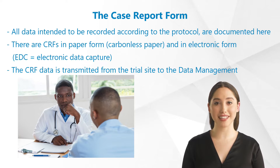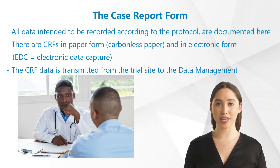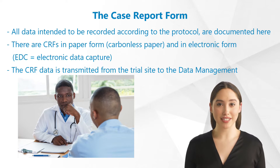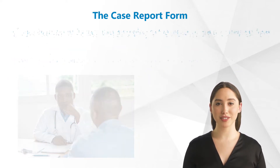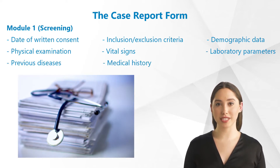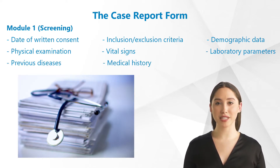CRFs exist in paper form, sometimes even on carbon paper, as well as in electronic form. One CRF is filled in per patient, and CRFs need to be allocated to patients clearly in order to avoid confusion. The case report form is usually divided into five modules with thematically related contents, reflecting the chronological sequence of the study.